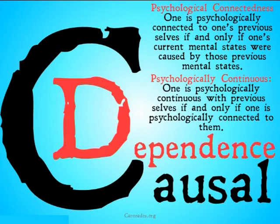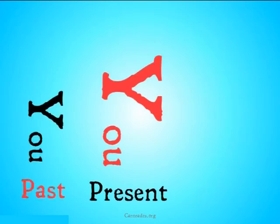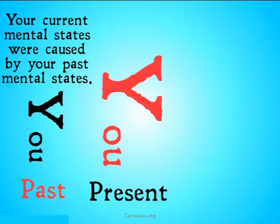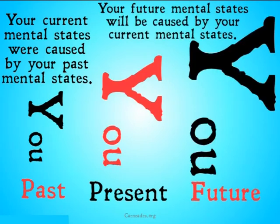Let's take a look at what this looks like. You in the present are identical to you in the past if your current mental states — your thoughts, feelings, beliefs, all that jazz — were caused by your past mental states. And you in the present are identical to you in the future if your future mental states will be caused by your current mental states. It doesn't make sense for us to be identical with mental states or thoughts that we weren't caused by. So that is the causal dependence criterion. I realize it's a little more complicated, but it's going to avoid a couple of the objections we'll pose to the memory criterion.